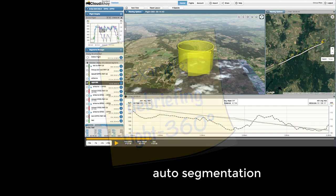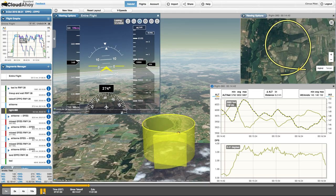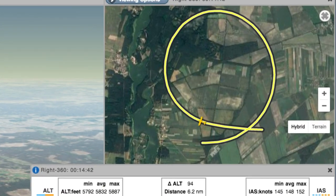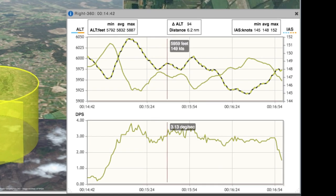Suppose you flew a Right 360. Cloud Ahoy automatically segments the flight, making it easy to focus on one maneuver. It will show you your bank during the turn, as well as your airspeed and altitude variations.